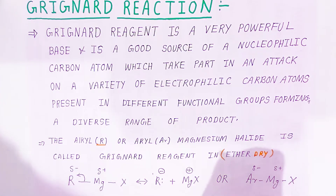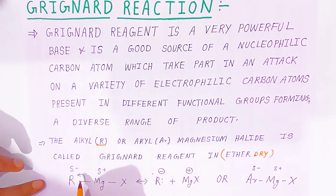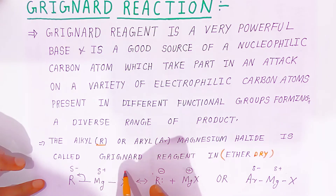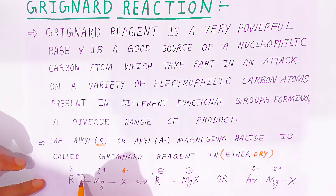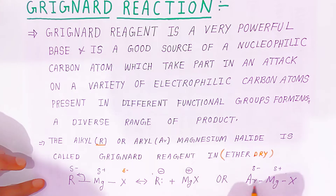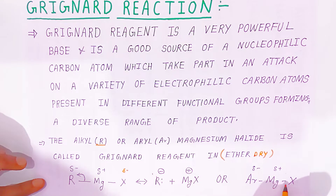In the RMgX structure, R always has a negative charge, magnesium is positive, and the alkyl halide portion is also negatively charged. Homolytic fission takes place to form R-MgX. The same applies when an aromatic ring is attached to magnesium and to the alkyl halide.